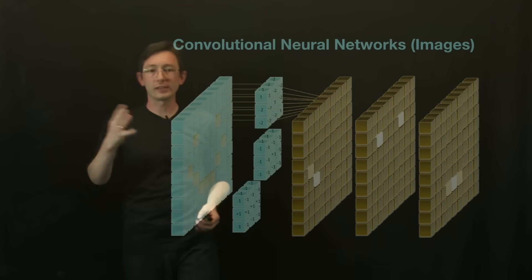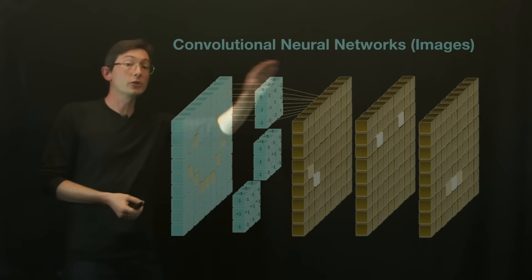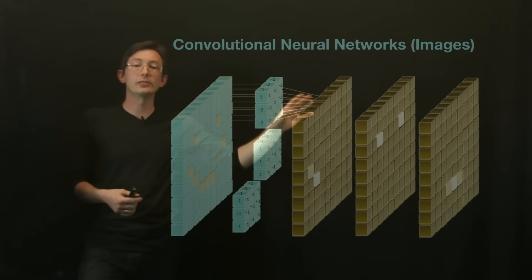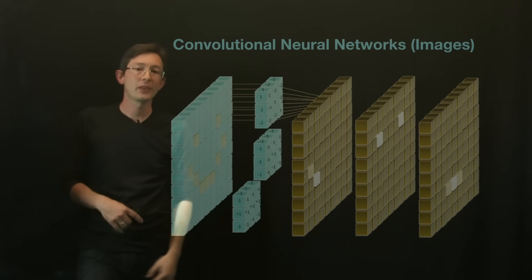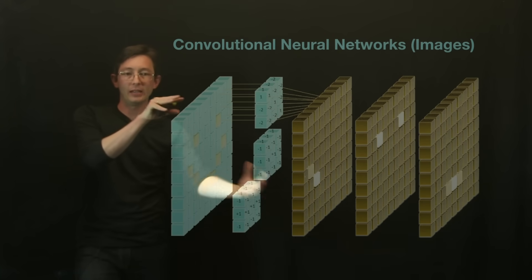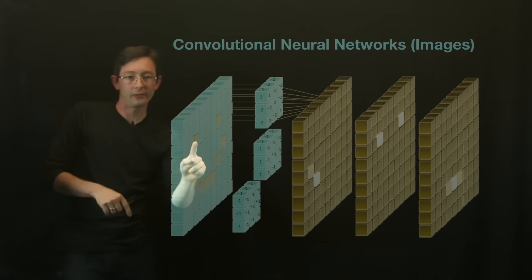A couple of key ones I want to point out. Convolutional neural networks, CNNs, are really important. These are used a lot in image recognition. The basic idea is if I have a big image, this array here, I don't know if you can see, but there's a smiley face. I took this from Wikipedia.